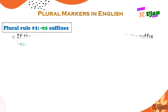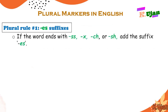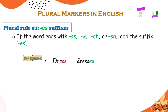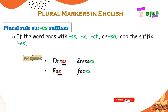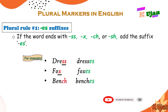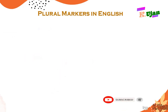This is part 2 of rule number 1. There are many words where we use -ES. If the word ends with SS, X, CH, or SH, add the suffix -ES. For example: dress ends at SS, so we get dresses. Fox ends at X, so foxes. Bench ends at CH, so benches. Dish ends at SH, so dishes.